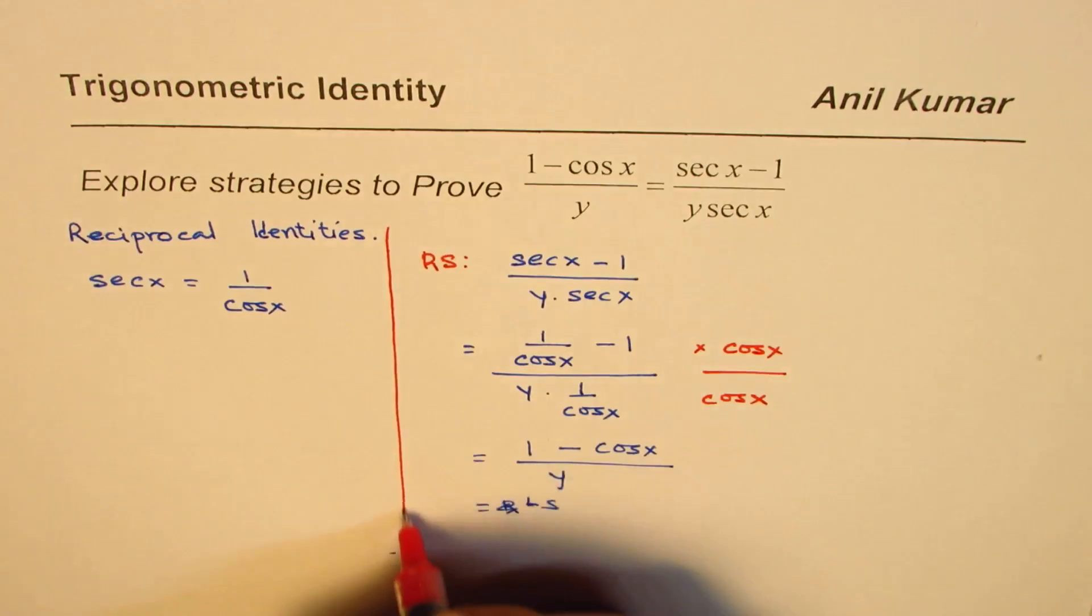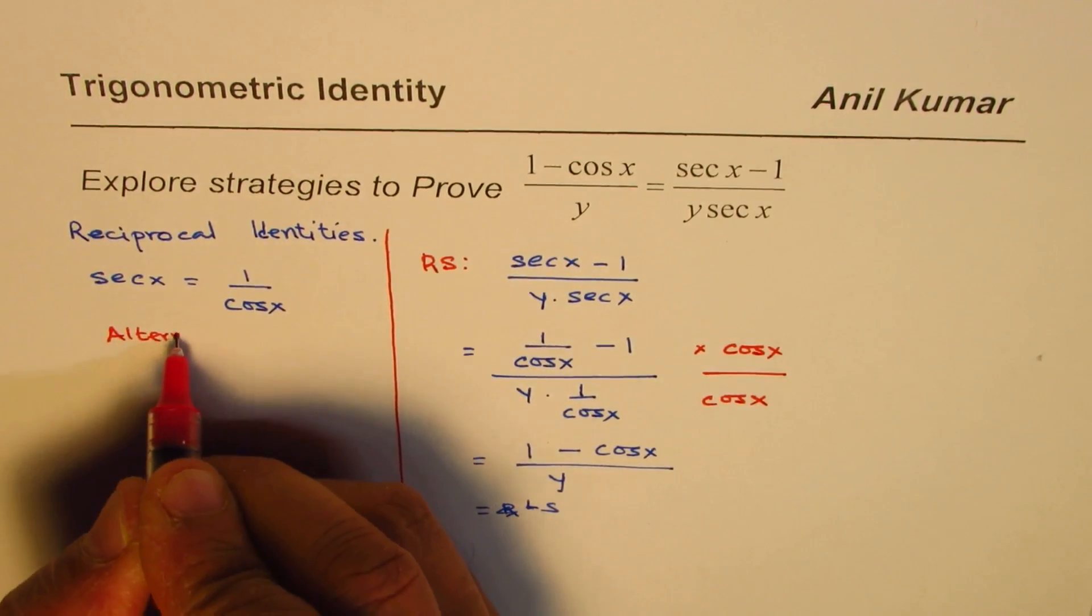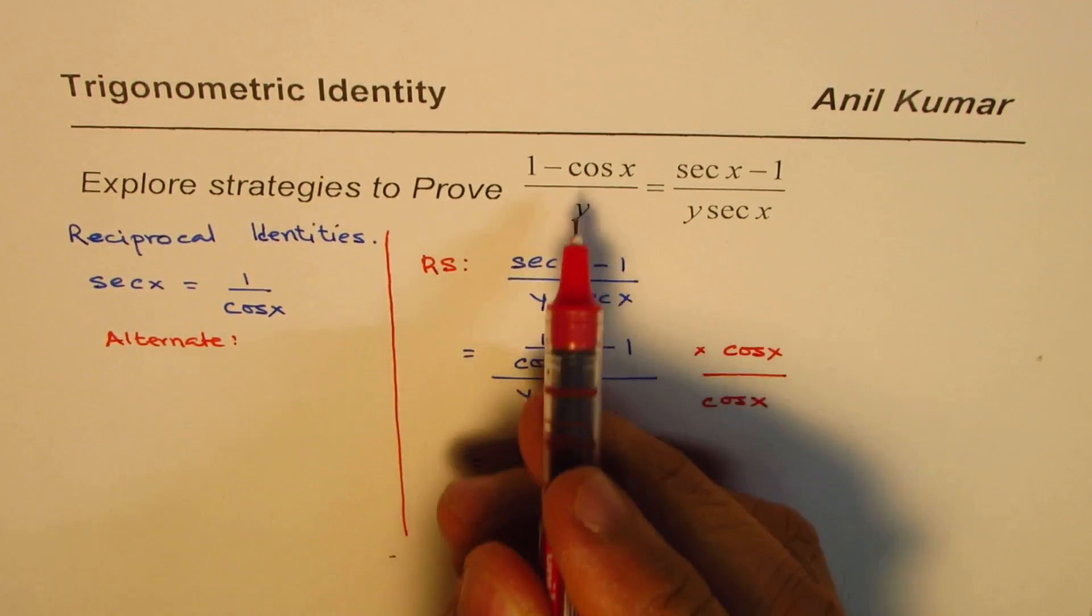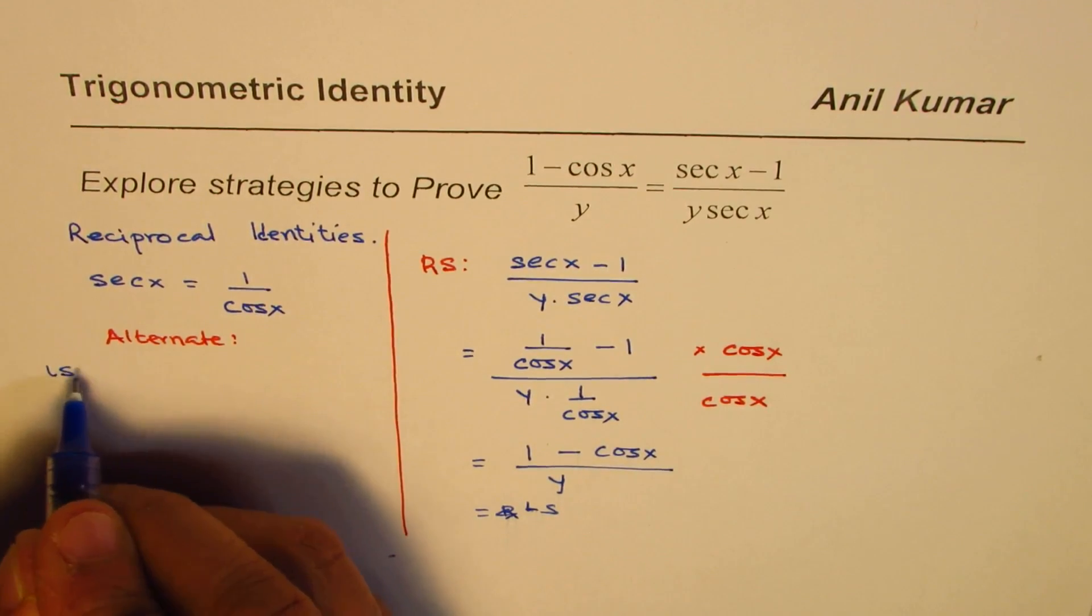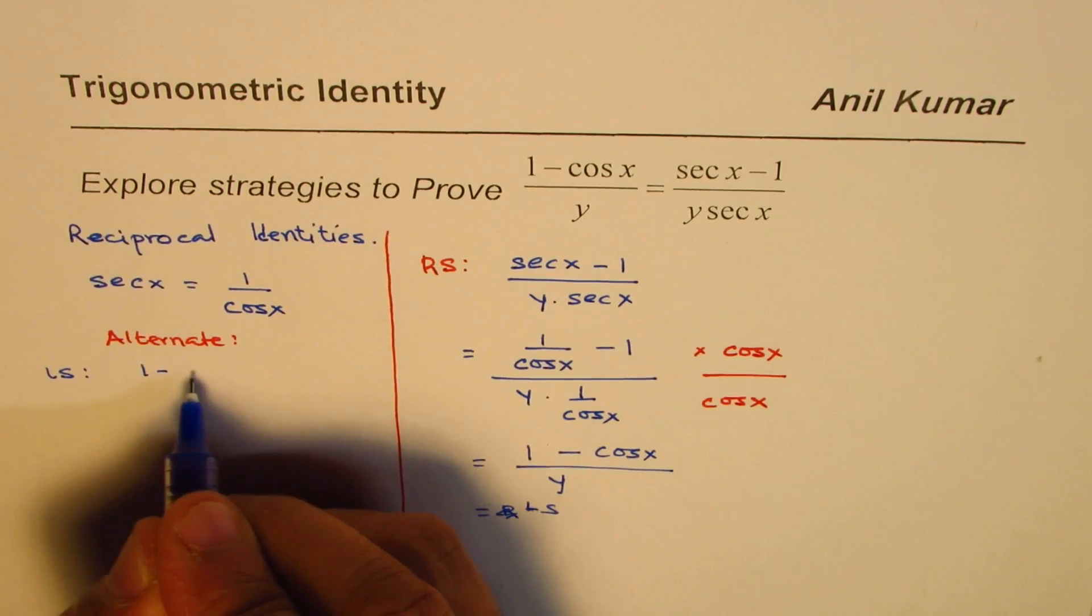Start with the left-hand side. The left-hand side is given to us as (1 - cos x)/y. Now in this case, instead of multiplying, we could divide by cos x.